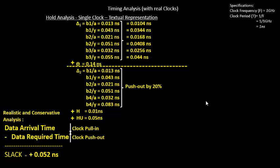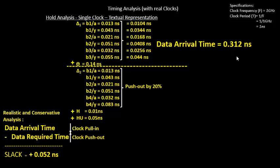Let's do a push-out over here. First, if we try to calculate the data arrival time based on the new derated delays, the data arrival time will be 0.312 nanoseconds or 312 picoseconds. This is your new data arrival time — you can quickly add up all of them in a calculator and confirm this number.